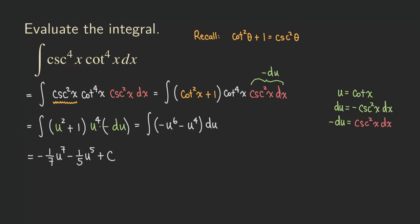Now we're basically done. All we need to do is replace all the u's with cotangent x. So the final answer is: negative one over seven times cotangent to the seventh power of x, minus one over five times cotangent to the fifth power of x, plus the constant of integration. And we're finished.